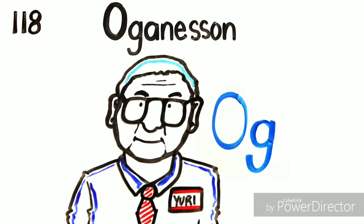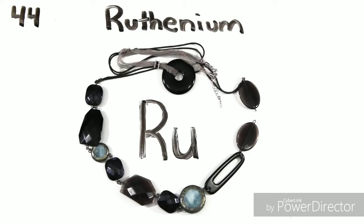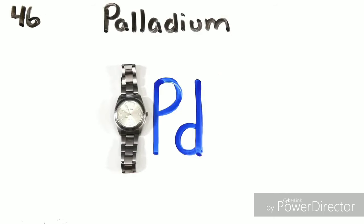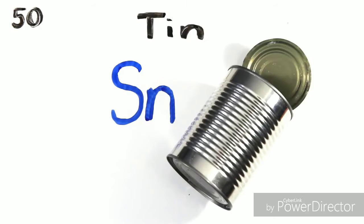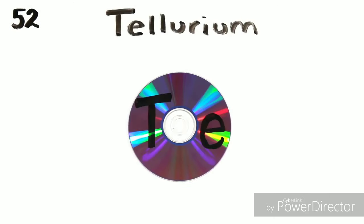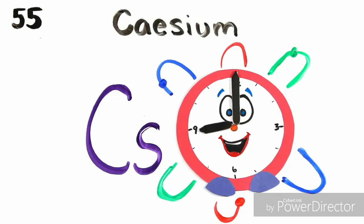Krypton, lets up down to Rubidium, Strontium, then Yttrium, Zirconium, Niobium, Molybdenum, Technetium, Ruthenium, Rhodium, Palladium, Silverware, then Cadmium, and Indium, Tin cans, Antimony, then Tellurium, and Iodine, and Xenon, and then Cesium.